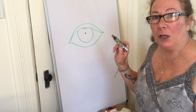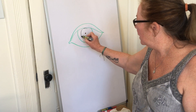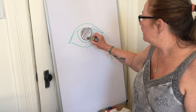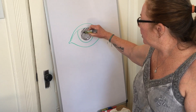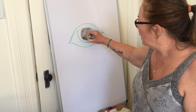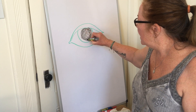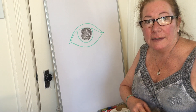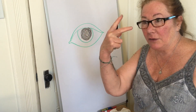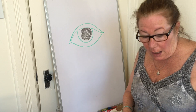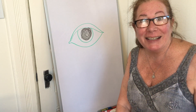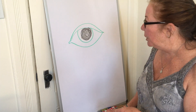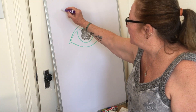Our bodies naturally protect themselves when going into the sun by making the pupil get small. When we go into a dark room, our pupil gets really big, because we need more light to enter our eyes in order to see. We need light to see.